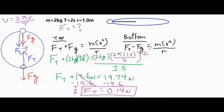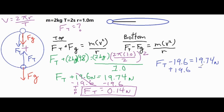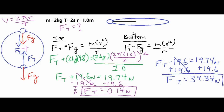For FT at the bottom, it's just a slight change — we don't have to do much work because we know most of our values. It's going to be FT minus FG. We already know FG is 2 times 9.8, so that's 19.6 equals MV squared over R. We already calculated MV squared over R, which is 19.74 newtons. All we do is add 19.6 to both sides, and our FT comes out to a significantly larger value of 39.34 newtons.